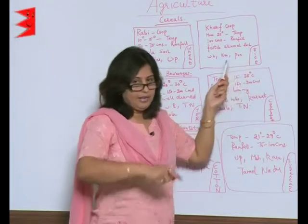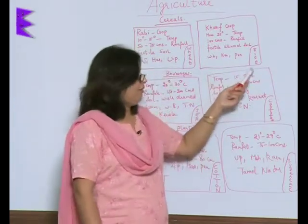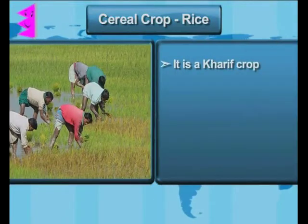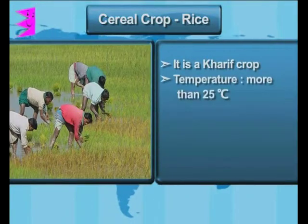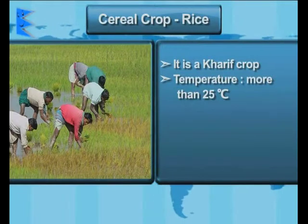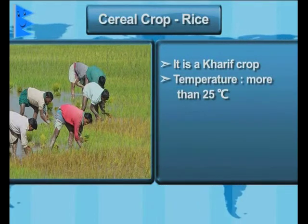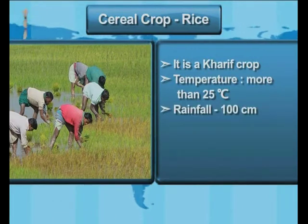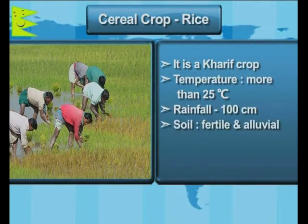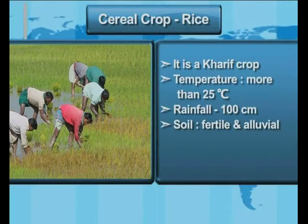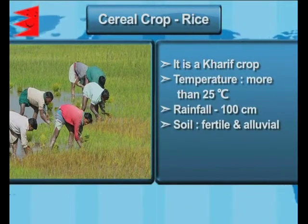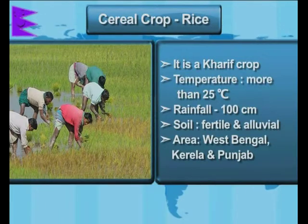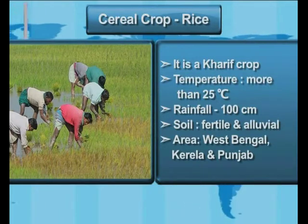Immediately draw the table for the rice crop. It's a kharif crop and the temperature required is always more than 25 degrees centigrade. The rainfall is 100 centimeters, the soil has to be very fertile alluvial soil. The areas where it is grown in India are West Bengal, Kerala, and Punjab.